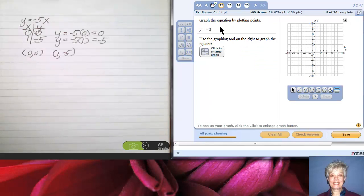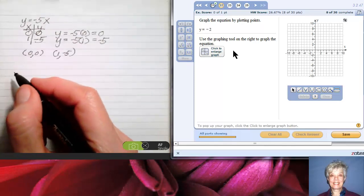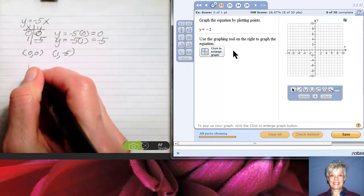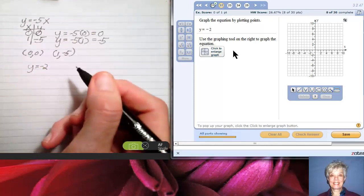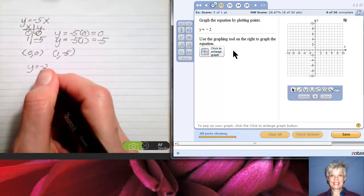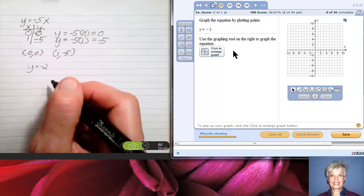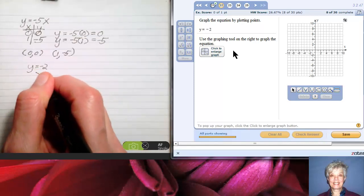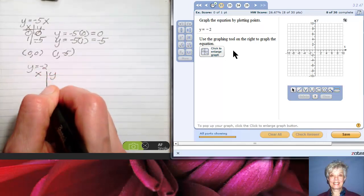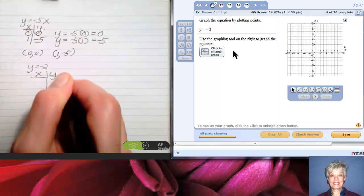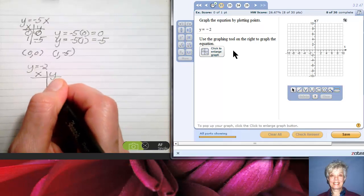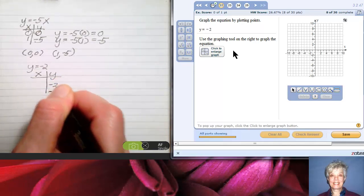Y equals negative 2. Notice there's not an x here. What could that mean? Well, I know what it means, but we're going to find out. Y equals negative 2 with no x means that y must always equal negative 2 and x can equal anything it wants. So I'll make an x and a y table.